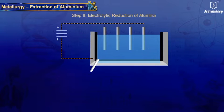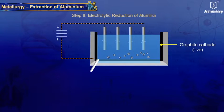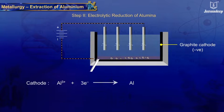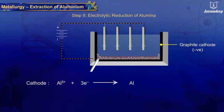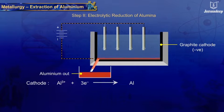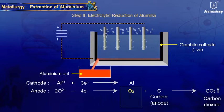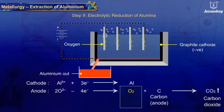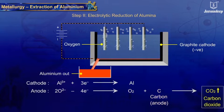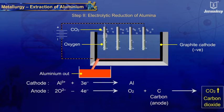On passing electricity, aluminium is obtained at the cathode. Being heavier than the electrolyte, molten aluminium sinks to the bottom of the tank from where it is removed periodically. Oxygen liberated at the anode reacts with the carbon anode and forms carbon dioxide, due to which the depleted anode has to be replaced from time to time.